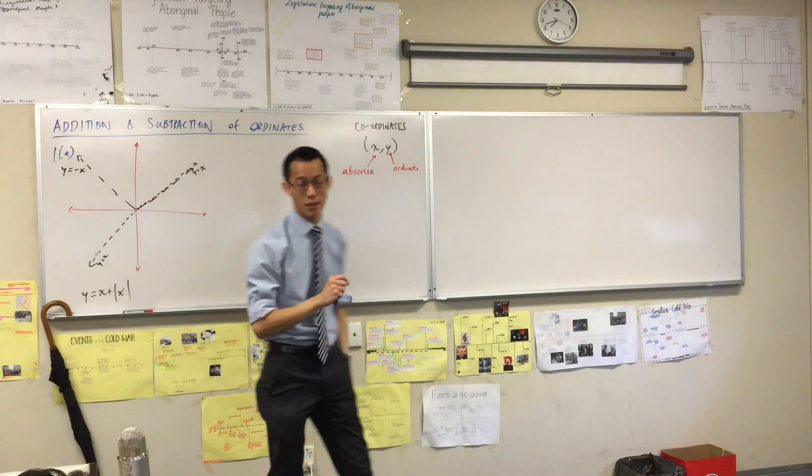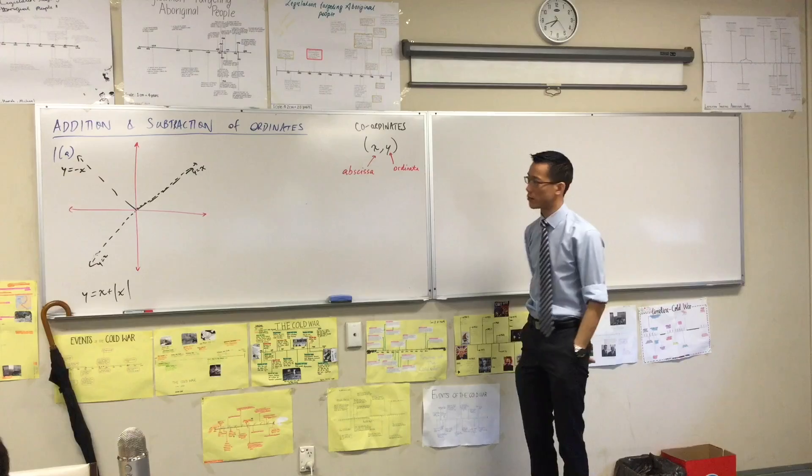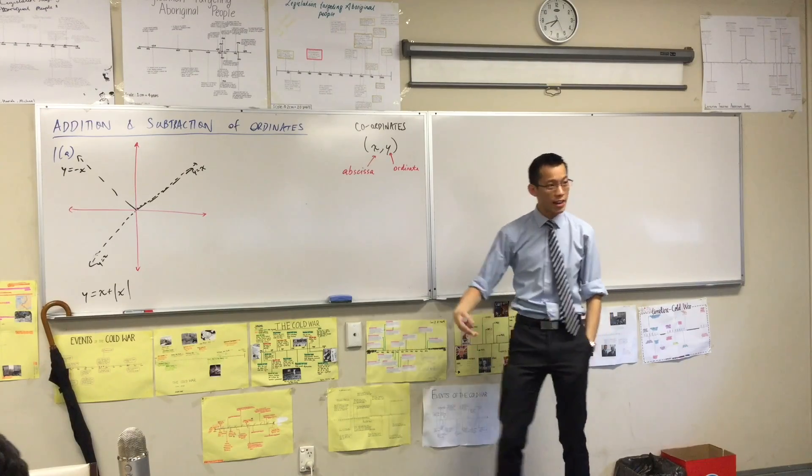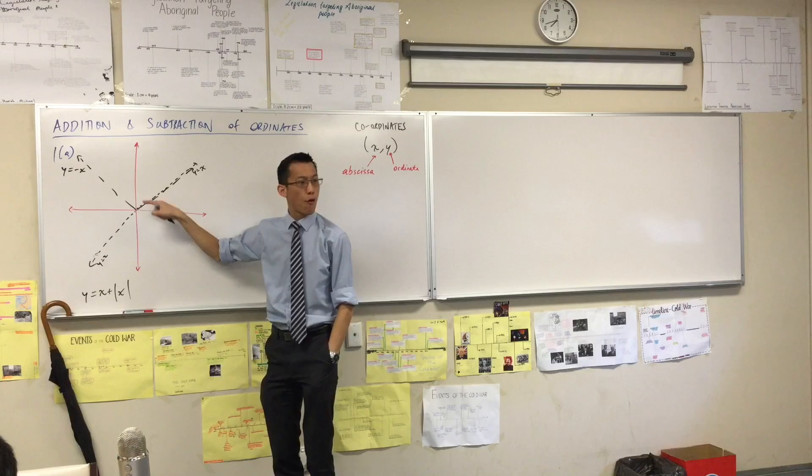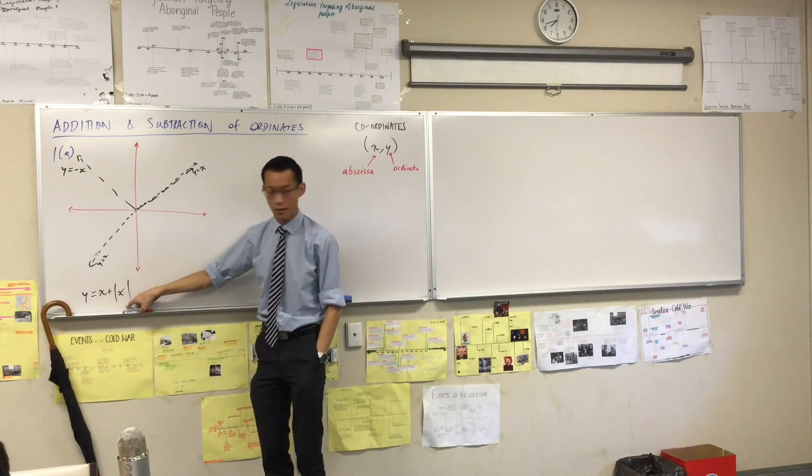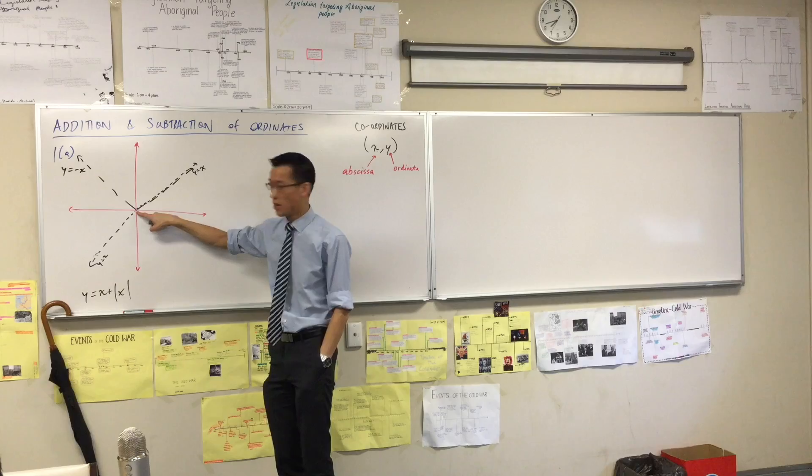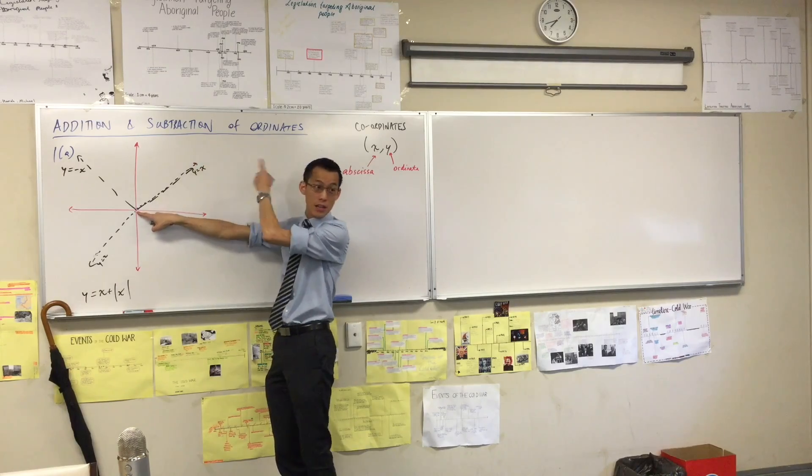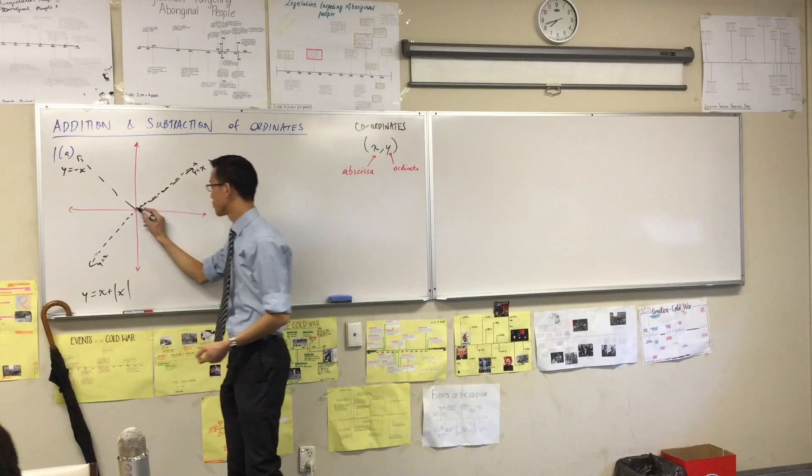I'm going to look at these y values, these ordinates, and I'm going to see what's going on, right? I'm going to start at the middle of the graph because that's a nice, easy point. The ordinates here for both of the graphs, this one and this one, the ordinates here are both zero. Do you agree with that? So, I'm just going to, as the name suggests, I'm just going to add them. So, zero plus zero is just zero. Cool. Right?